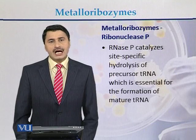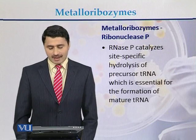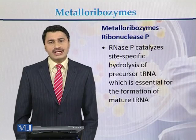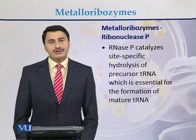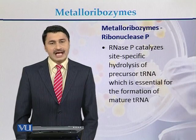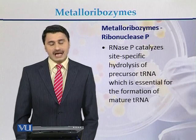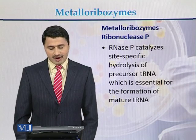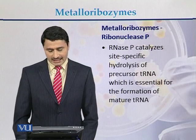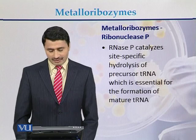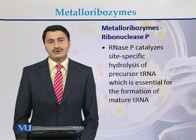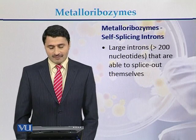Metalloribozymes are in two forms. The first form is called ribonuclease P. Ribonuclease P catalyzes site-specific hydrolysis of precursor transfer RNA, which is essential for the formation of mature transfer RNA.